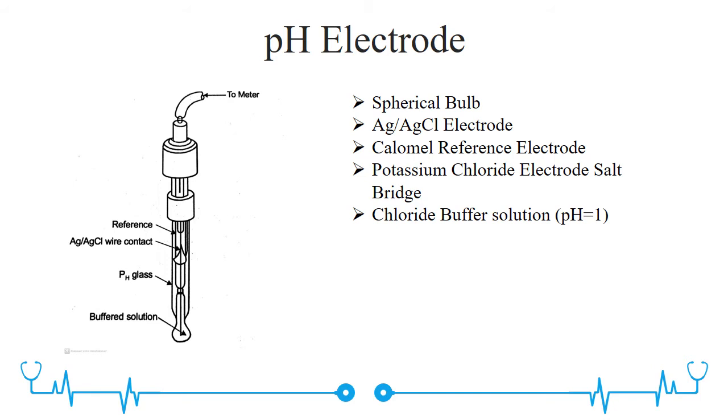Inside the glass bulb, a silver-silver chloride non-polarizable electrode is immersed in a chloride buffer solution of pH 1. The other side of the glass bulb is exposed to the solution of unknown pH. The connection to the potential measuring circuit is through a potassium chloride salt bridge and calomel reference electrode. Today, the glass electrode and reference electrode are available in the same enclosure.